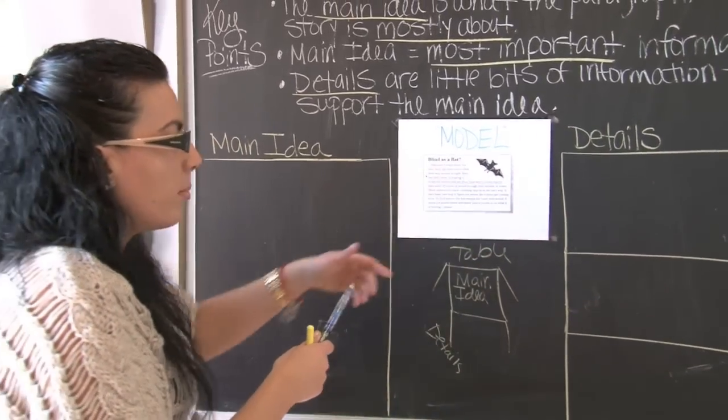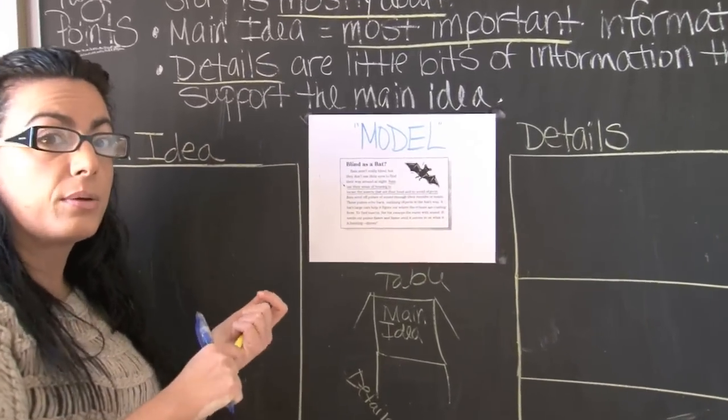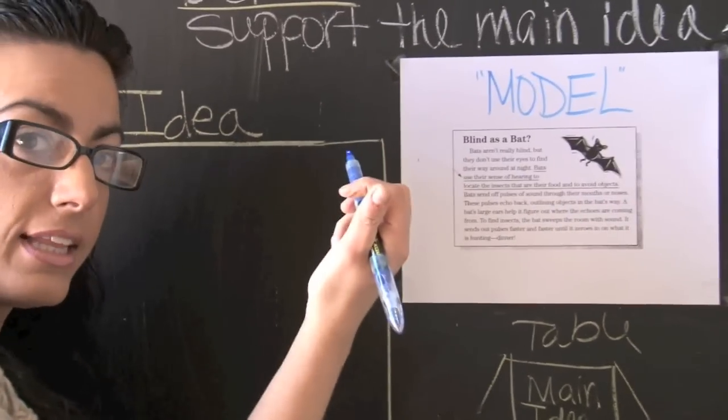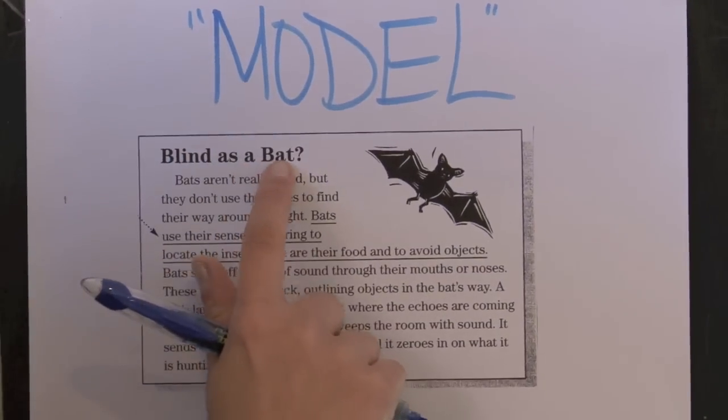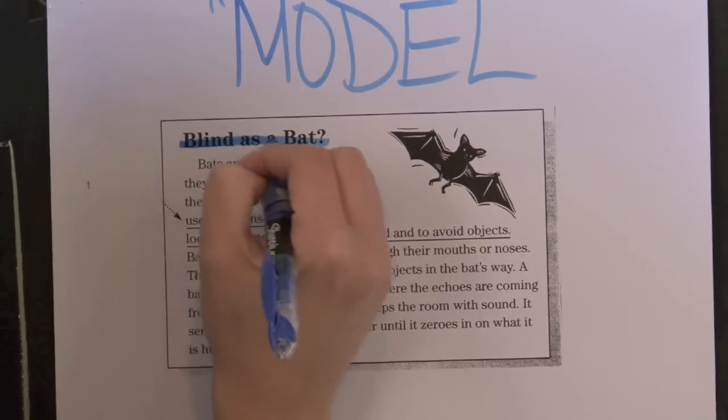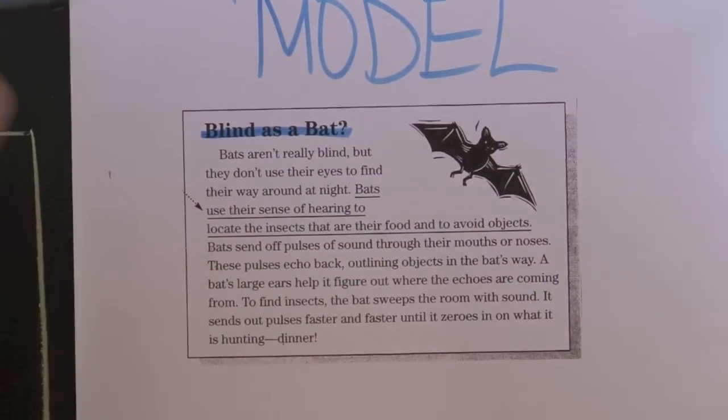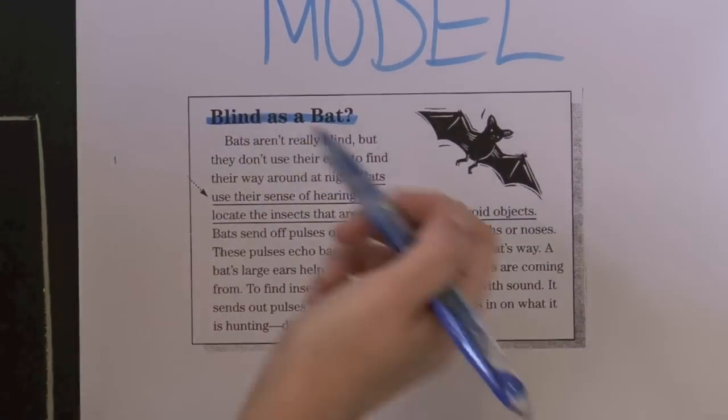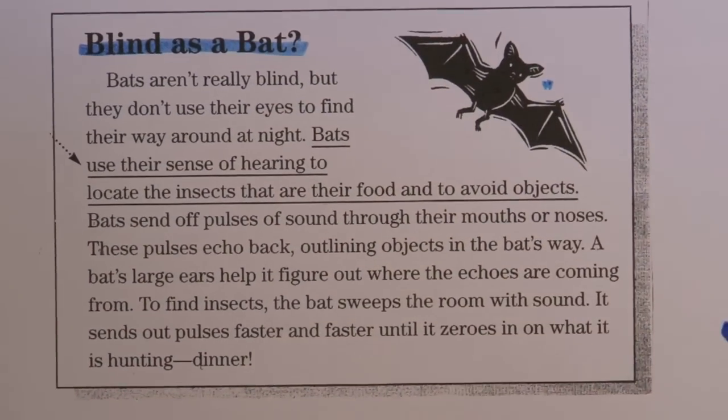So let's take a look at our model. Remember, while we're reading, we're going to be reading actively, which means you're not going to just sit there. You're going to use your highlighter and point to each word with me. Blind as a bat. Now, we know that is our title. And you notice that our title has a question mark, so it's asking you to think about why. Why would a bat be blind? And take a look at our picture clip here.